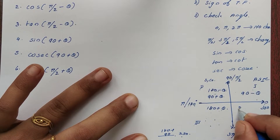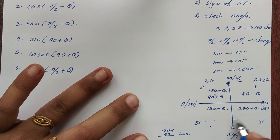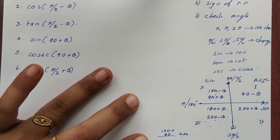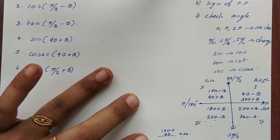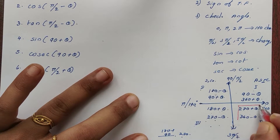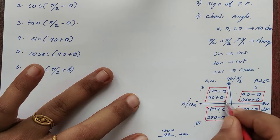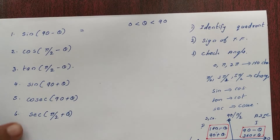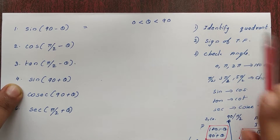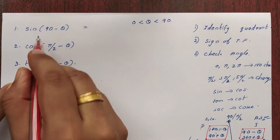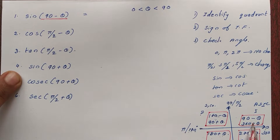270 plus theta — if we add theta to 270 and the angle of theta is small, it will land in the fourth quadrant. Now, we identify the quadrant: the angle is 90 minus theta, which falls in the first quadrant.